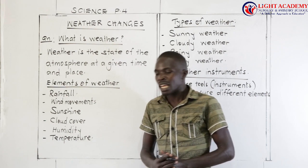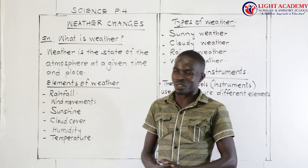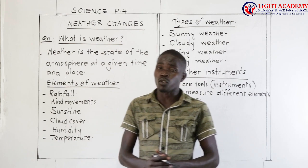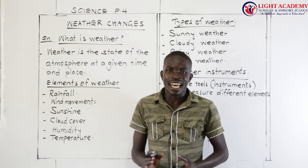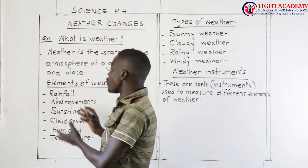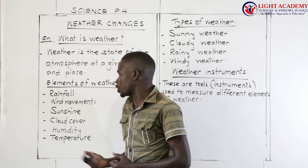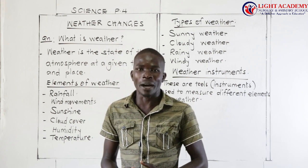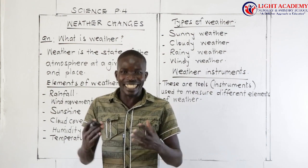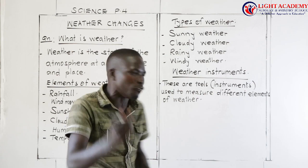For example, for rainfall received, we use a tool called the rain gauge. A rain gauge is used to measure the amount of rain received. For wind movements, when you look at the speed of wind, we use an anemometer. For the direction of wind, we use the wind vane. For the strength of wind, we use the wind sock. For sunshine, we use a sunshine recorder to measure the intensity of sunshine. For humidity — the amount of water vapor in the atmosphere — we use a hygrometer.